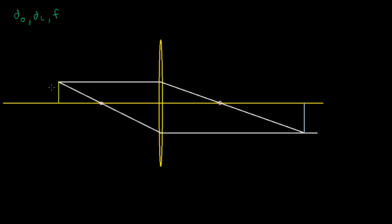We can imagine this green thing right here is the object. And these two little pink points right here are the focal points — they're a focal length away. I drew one parallel ray from the tip of that arrow to the convex lens, and then it gets refracted, so it goes through the focal point on the right-hand side. Then I drew a ray that goes through the focal point on the left-hand side, and when it gets refracted it becomes parallel, and it intersects with that previous ray right over here. This gives us a sense of what the image will look like — it's inverted, it's real, and in this case it is larger than the actual object.